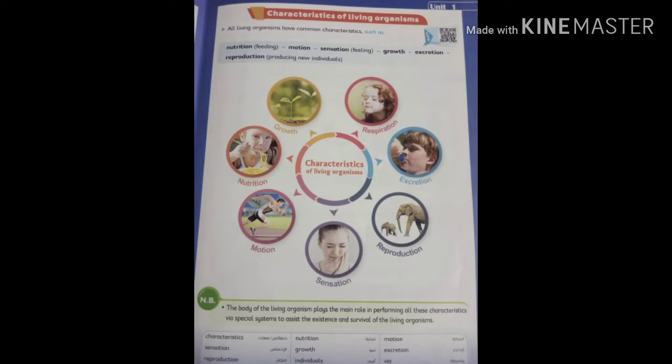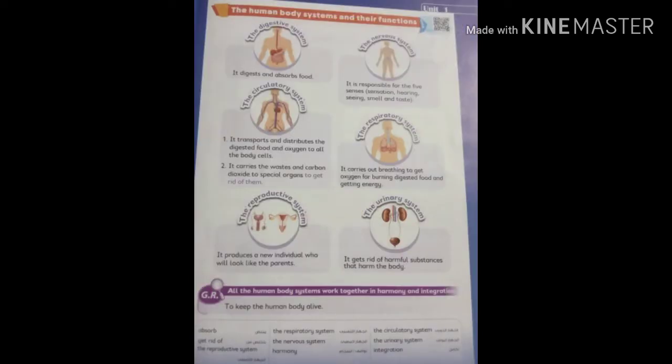Respiration means breathing. Sensation means the organism — plant, human, and animal — can feel. Reproduction means the plant, animal, and human can produce new individuals who look like them. Excretion means the body of human, plant, or animal can get rid of waste.